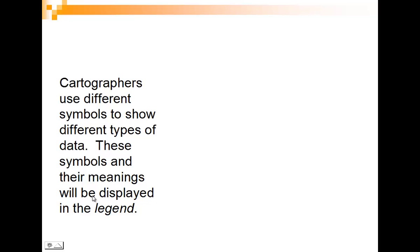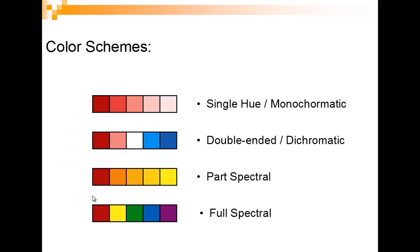Then we have full spectral with a lot of different options to work with. Studies show that certain colors like greens and purples have a little bit more internal contrast than other colors, so you might be able to squeeze out another class. White to black doesn't have a lot of internal contrast, but we use it for people who are color blind and also because when we print our work, it's often converted to black and white.